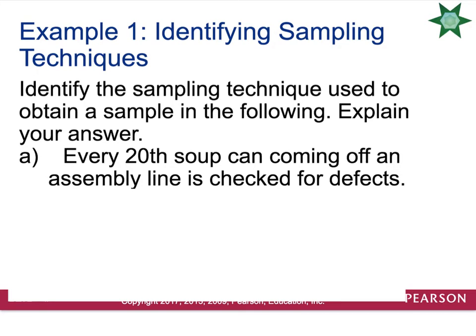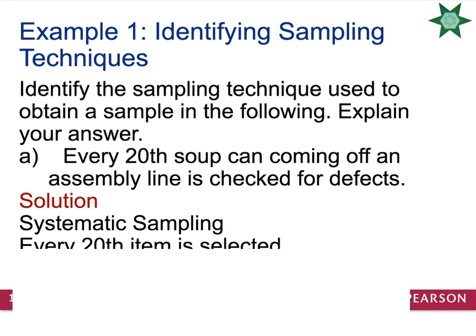Example A: every 20th soup can coming off an assembly line is checked for defects. Since they have made a systematic number that they're planning on checking, this is going to be systematic sampling. As soon as they decide they're going to check the nth number, that is called systematic.